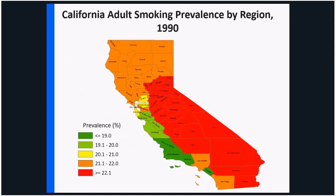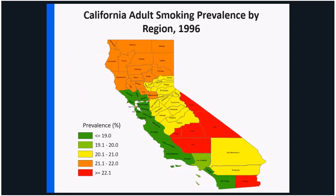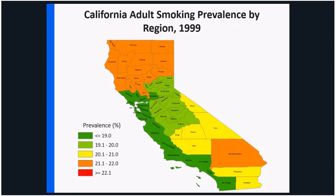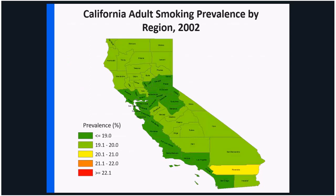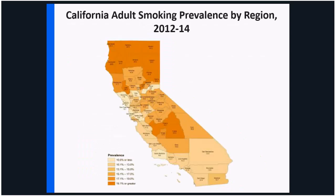Red areas indicate high smoking rates and green indicate low smoking rates. We see data from 1990, then 1996, then 1999, and by 2002 we have virtually all green with a little yellow in Riverside County in Southern California. Looking at more recent data from 2012 to 2014, the entire state is lower. In fact, the overall smoking rate in California is now 11%, the lowest in the country, and the highest smoking rates are now in the north. You can see the value and the power of a public health endeavor like California Prop 99.